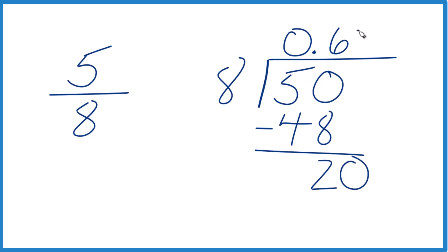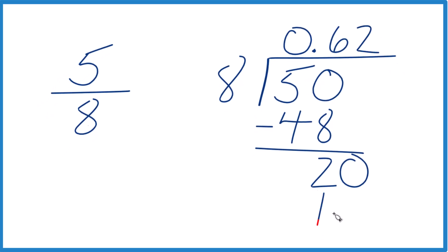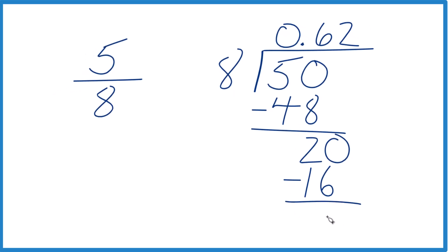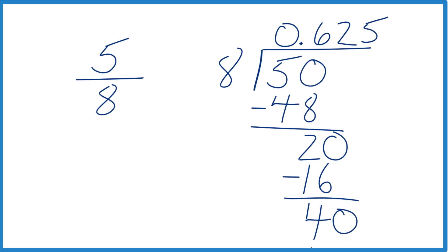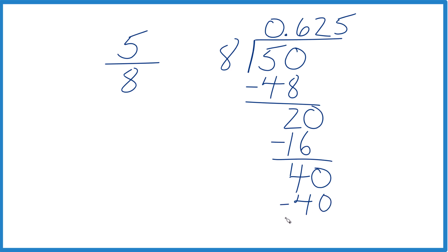2 times 8 is 16. Then when we subtract, we get 4. 8 doesn't go into 4. Move over 1. Call this 40. And 5 times 8, that's 40. Subtract, no remainder.